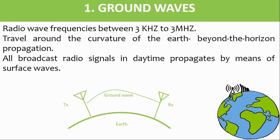Ground wave propagation requires a lower power transmitter than other methods of radio wave propagation. It is used for medium-range communication, such as 100 kilometers to 1000 kilometers.